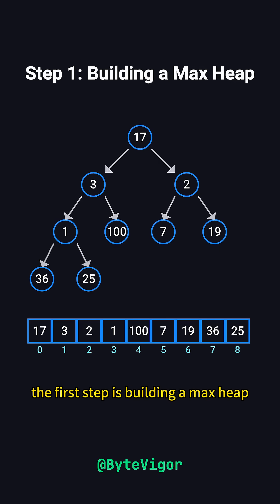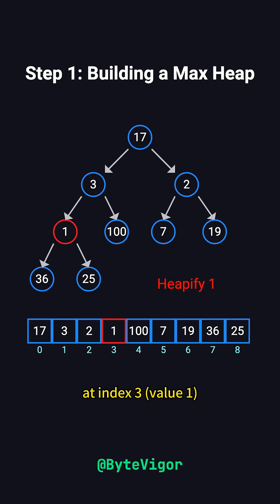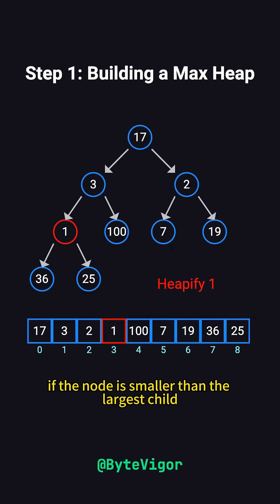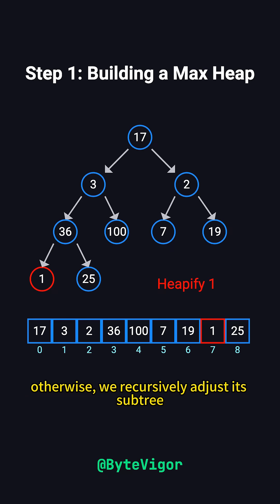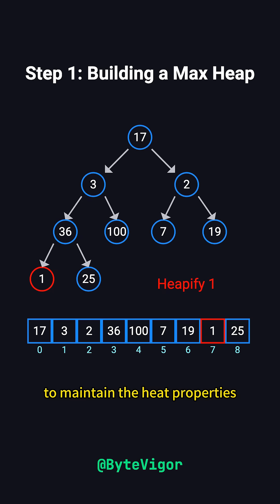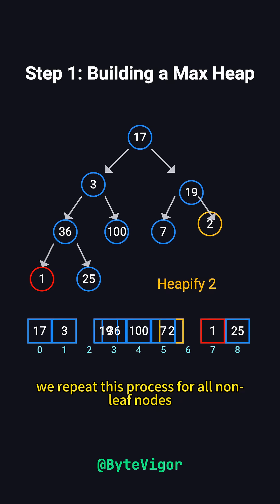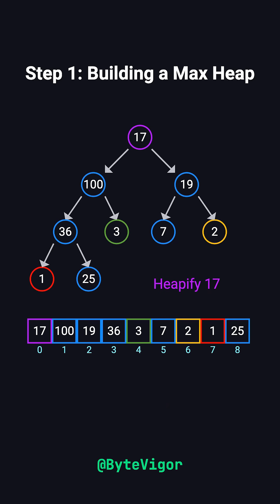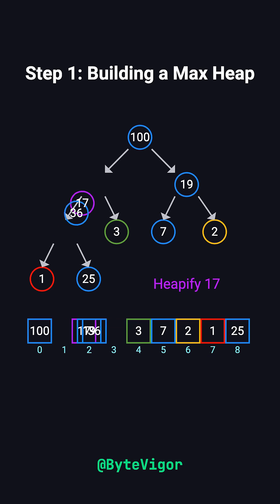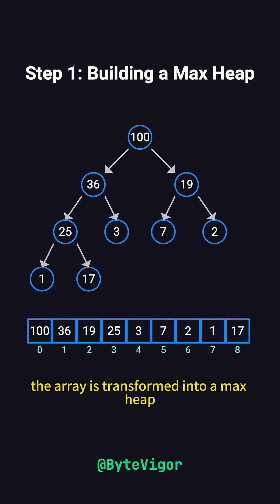The first step is building a max heap. Starting with the last non-leaf node at index 3, value 1, we compare it with its children. If the node is smaller than the largest child, we swap them. After the swap, if the node becomes a leaf, we stop. Otherwise, we recursively adjust its subtree to maintain the heap properties. We repeat this process for all non-leaf nodes, moving from the bottom to the top. Once completed, the array is transformed into a max heap.